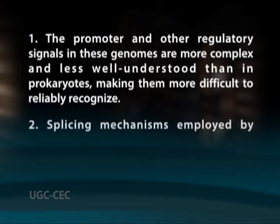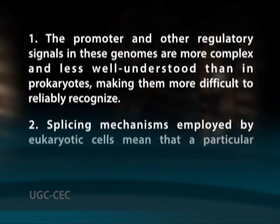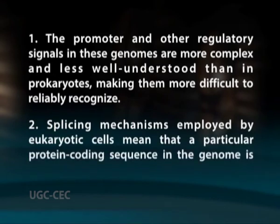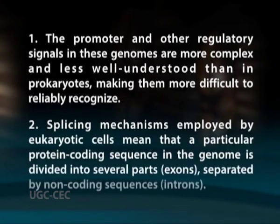Two classical examples of signals identified by eukaryotic gene finders are CpG islands and binding sites for the poly-A tail. Second, splicing mechanisms employed by eukaryotic cells mean that a particular protein coding sequence in the genome is divided into several parts — exons — separated by non-coding sequences, or introns.